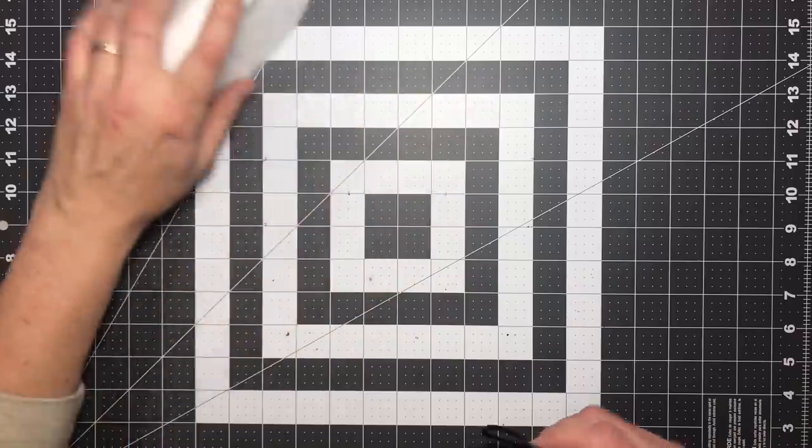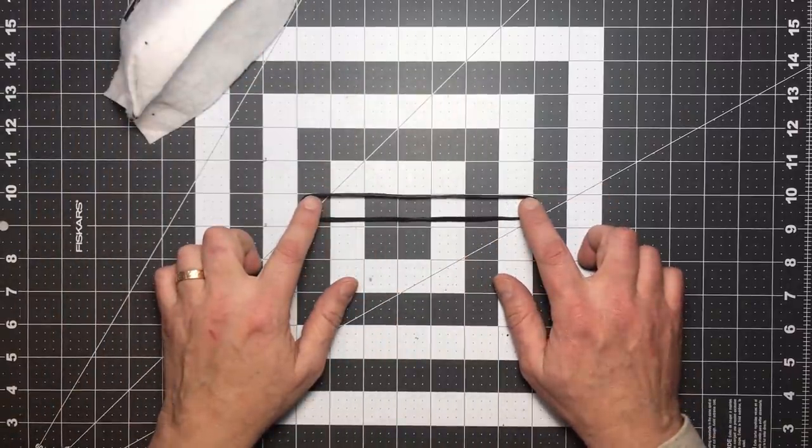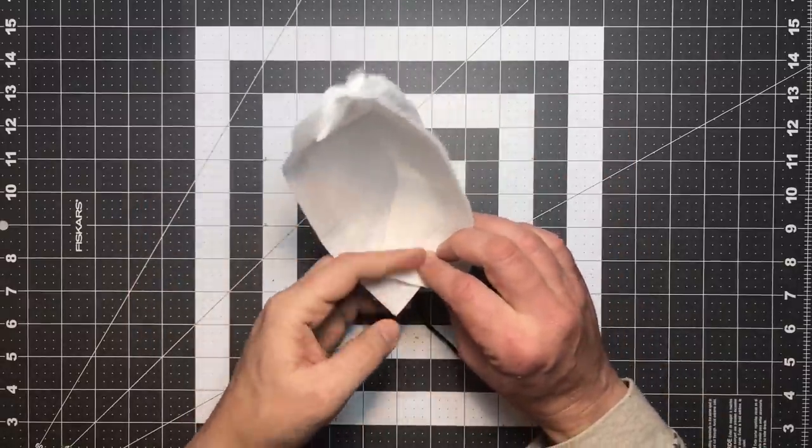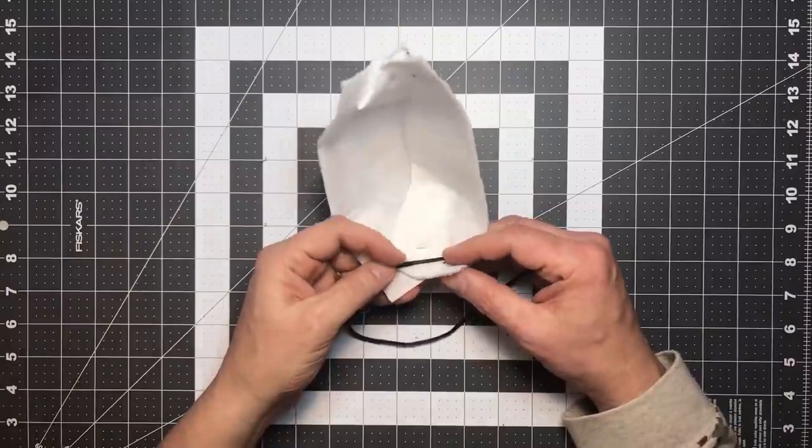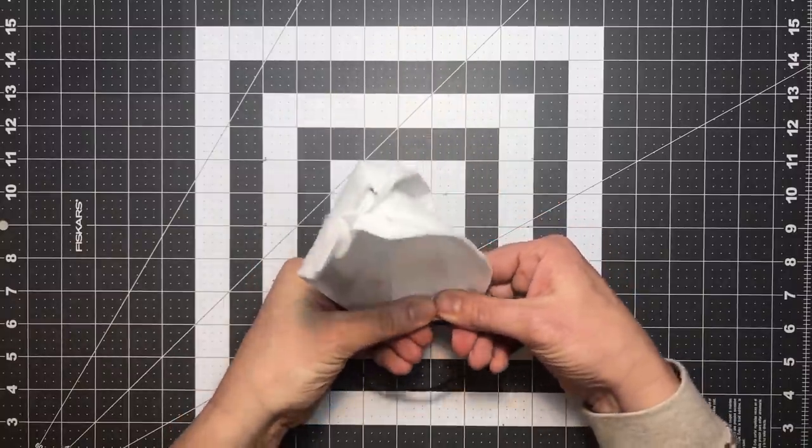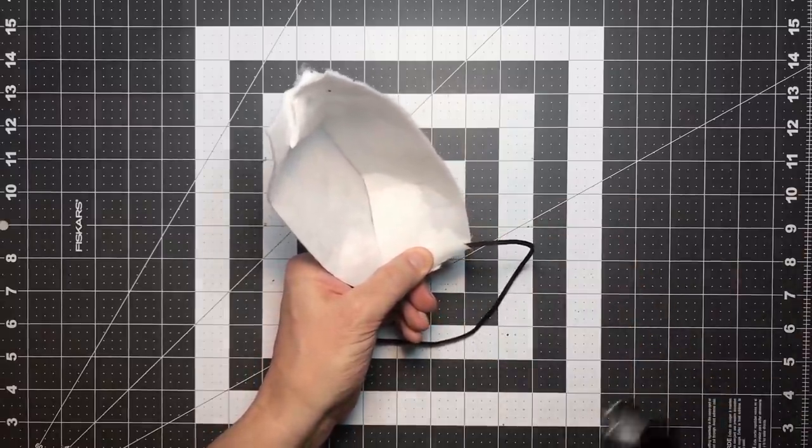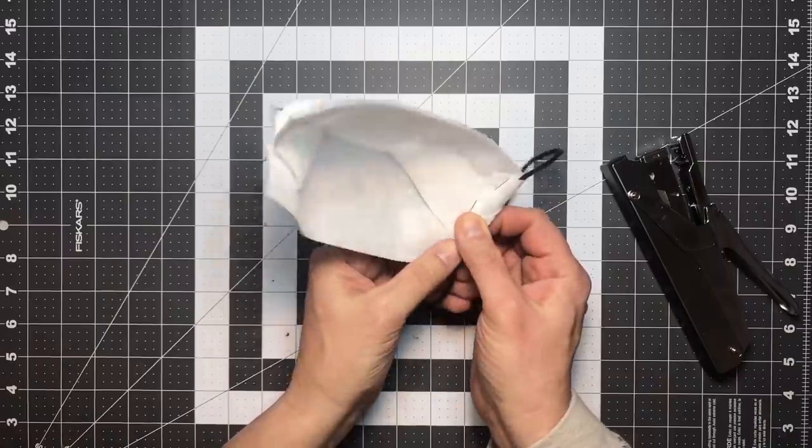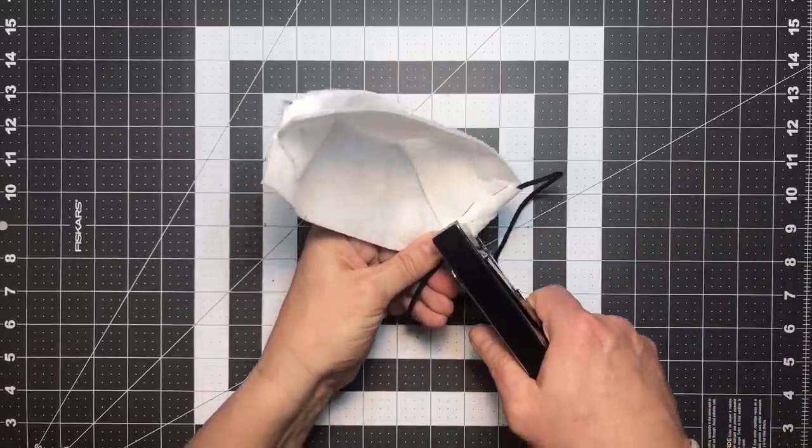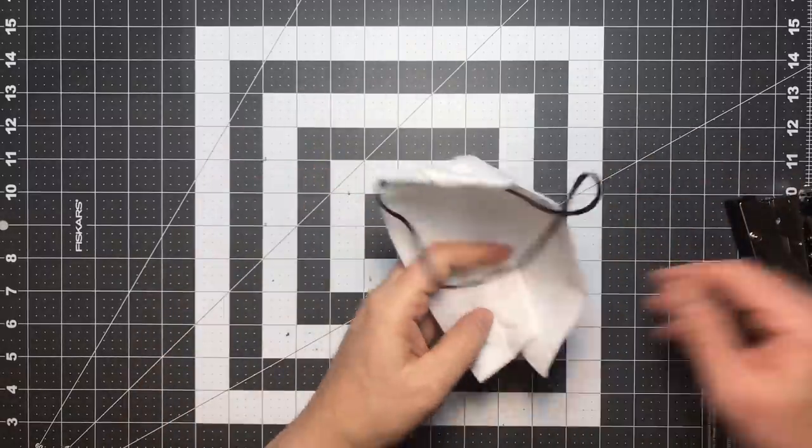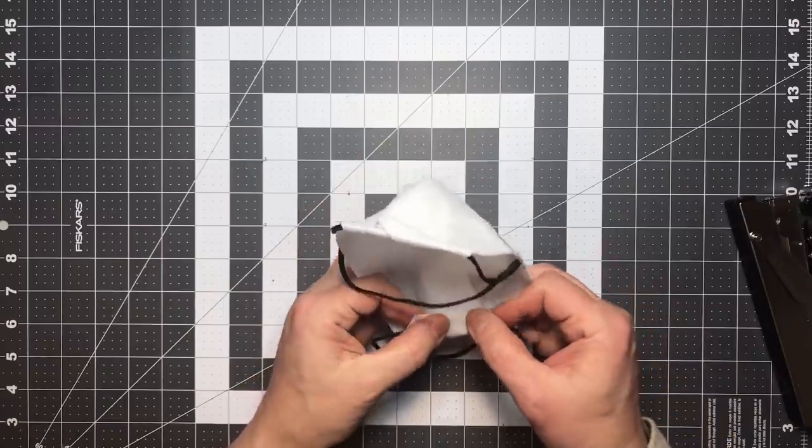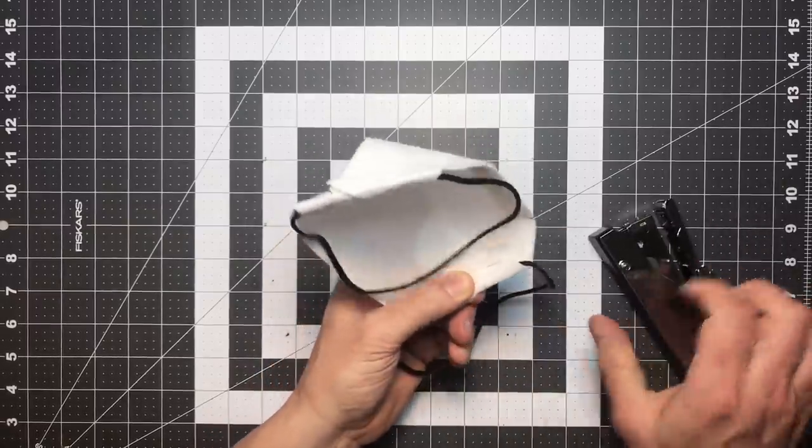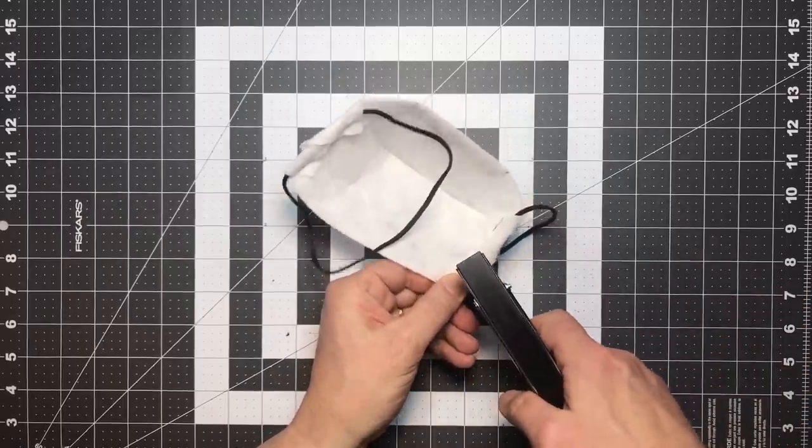Now we need to attach the rubber bands and these rubber bands that I have here are about seven inches long and they're probably a little bit long. Six inches would probably be better and thinner is better than thicker. And the way we attach those is we just lay them across these two triangles and fold those triangles over like tabs just like that. And then we'll just put a staple in each one. On the other side fold the triangles over and put a staple in each one.